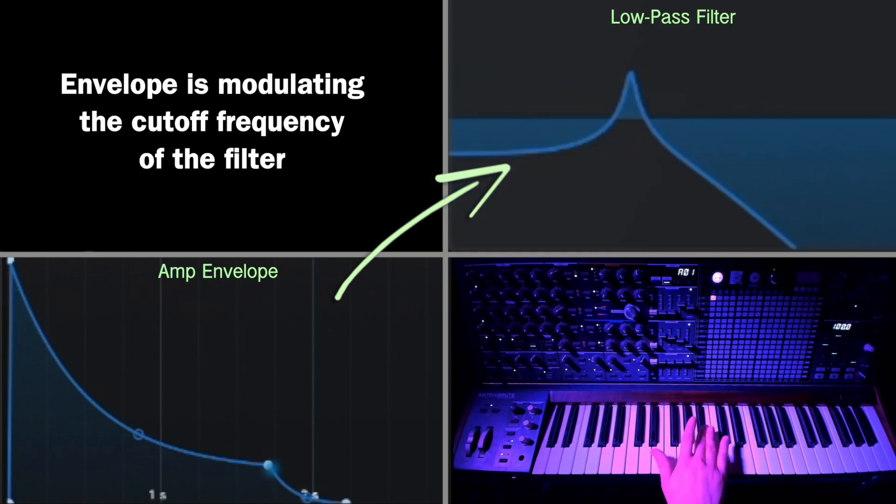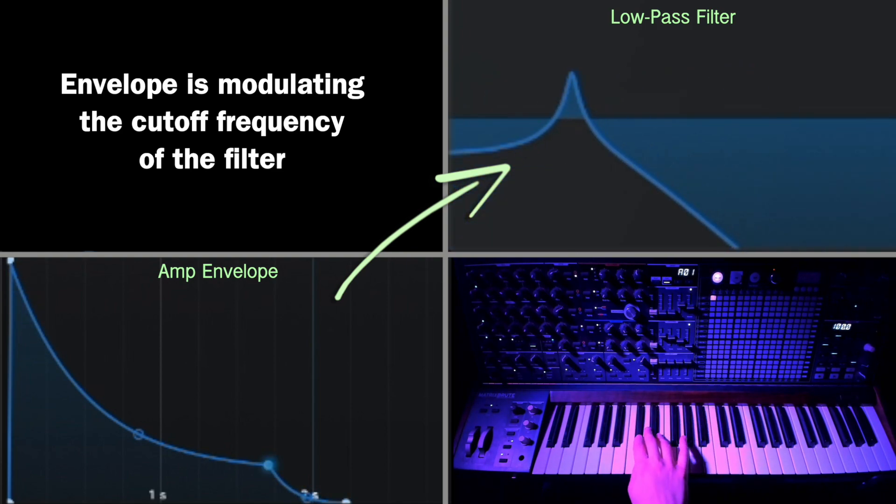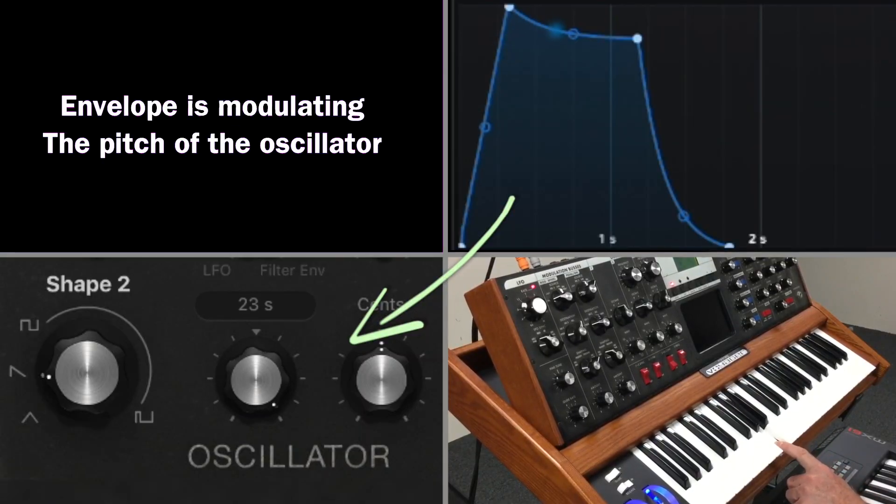Envelopes can be applied to other parameters as well. Using a filter envelope, we can control the attack, decay, sustain, and release of the opening of a filter. Using a pitch envelope, we can modulate the pitch of the oscillators in interesting ways. We can also control whether an envelope is triggered every time a key is pressed, or every time a new group of notes starts.